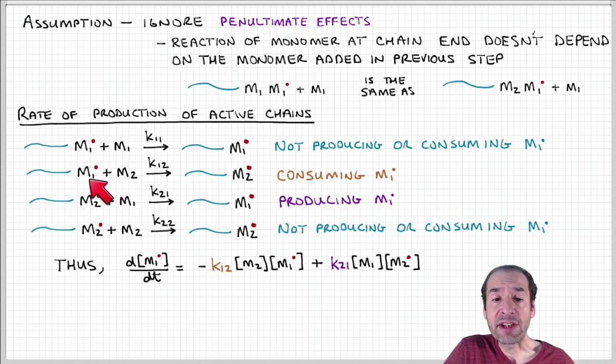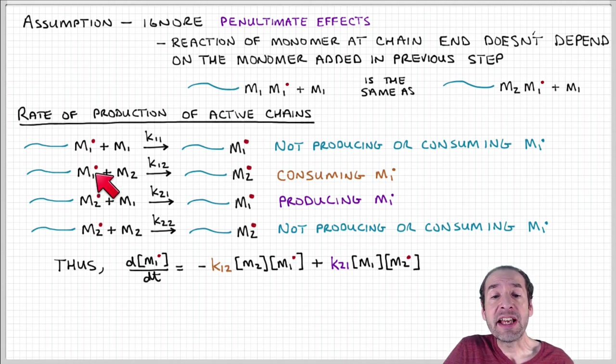But now look at these cross reactions. If we have a chain that ends in monomer one that contains the active site and we add monomer two, now that's an active chain where the site, the free radical site, is associated with monomer two at the end of the chain.